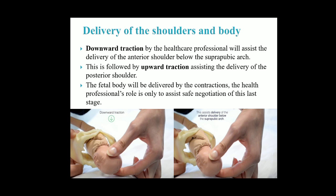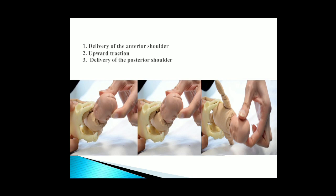Delivery of the shoulders and body: downward traction by the healthcare professional will assist the delivery of the anterior shoulder below the suprapubic arc. This is followed by upward traction assisting the delivery of the posterior shoulder. The fetal body will be delivered by the contractions and the healthcare professional's role is only to assist safe negotiation of this last stage. As seen in the pictures, the anterior shoulder is delivered with downward traction, the posterior shoulder with upward traction, and the trunk or body of the fetus is delivered by lateral flexion.